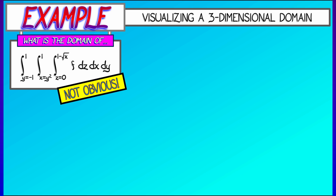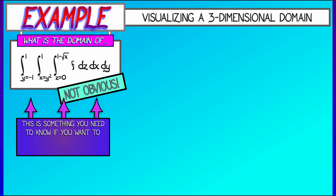It's not clear to me what the shape is that we are integrating over, but it is kind of important to know that. If I wanted to change the limits of integration, it would really help me to know the three-dimensional shape so that I can figure out the bounds when I change the order of integration variables.